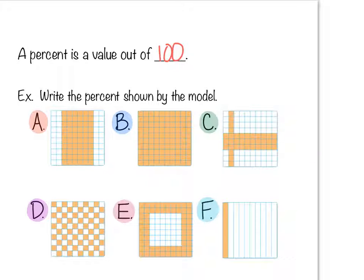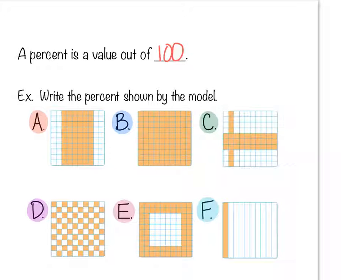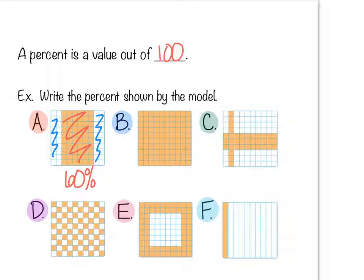The first six problems say 'write the percent shown by the model.' These are 10 by 10 squares and we want to show the percentage that are shaded. In example A, six rows are shaded and each row has 10 squares, so this would be 60 percent. You can count the shaded ones, or count the 40 unshaded squares and subtract from 100.